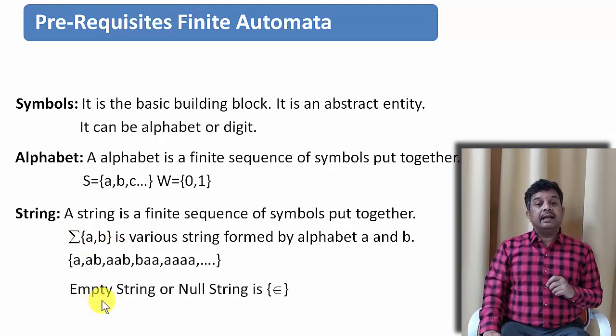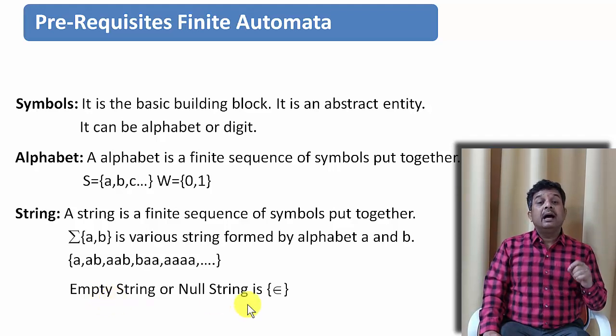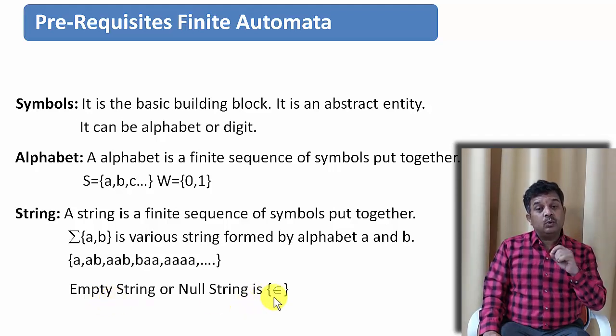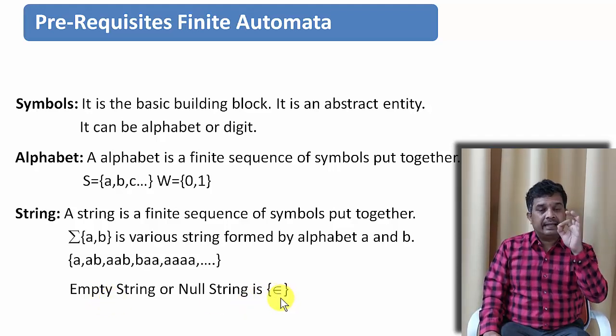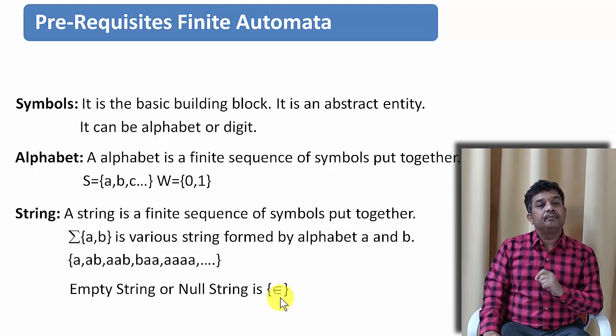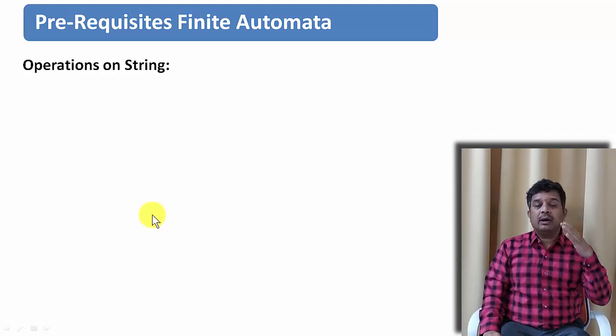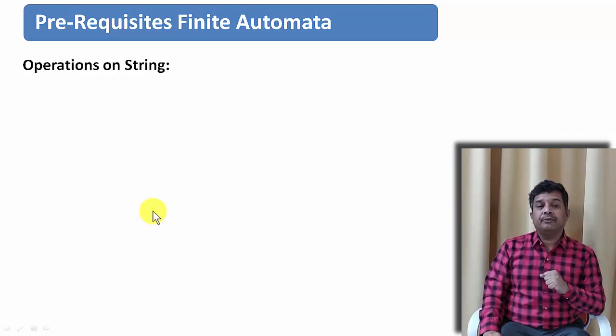One more string is there — that is the null string, which we denote by the symbol epsilon. It means the string length is zero. Let us see what are the string operations that we perform.